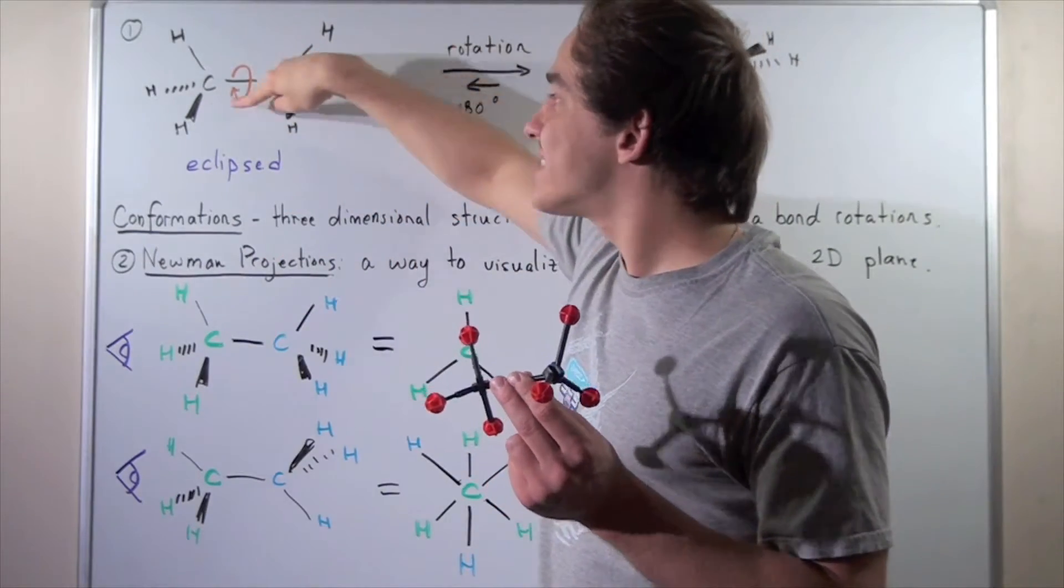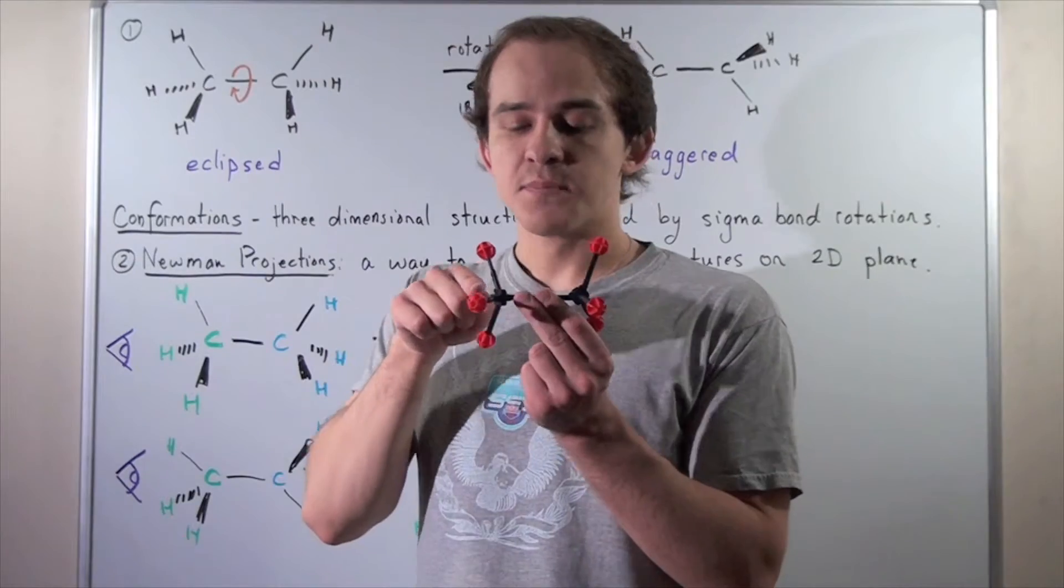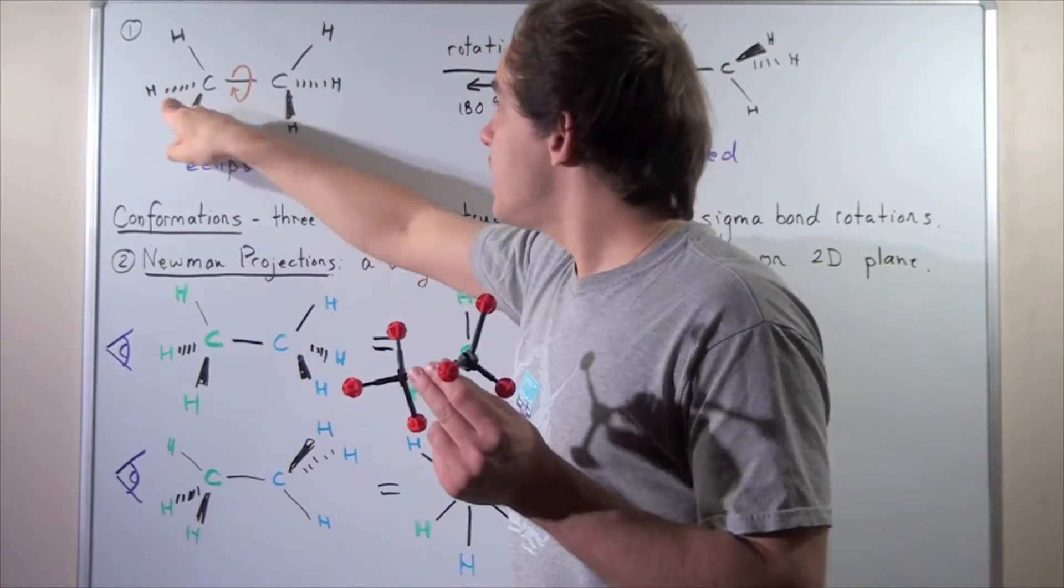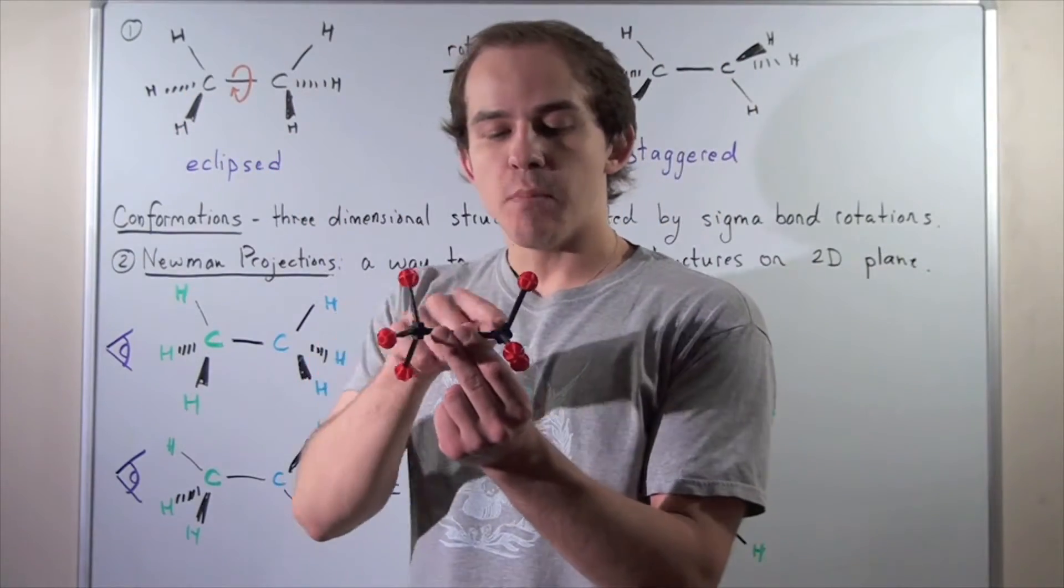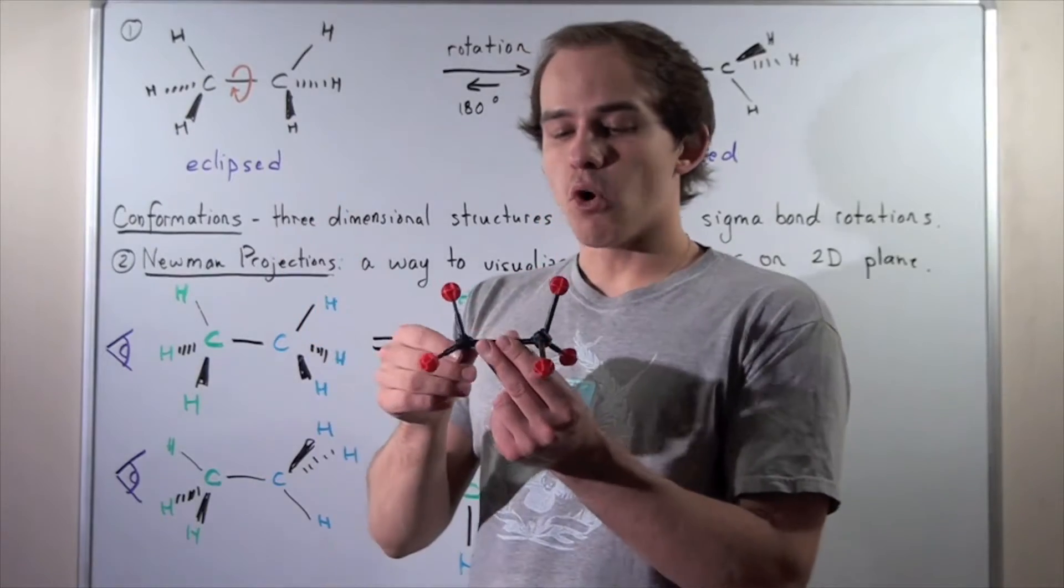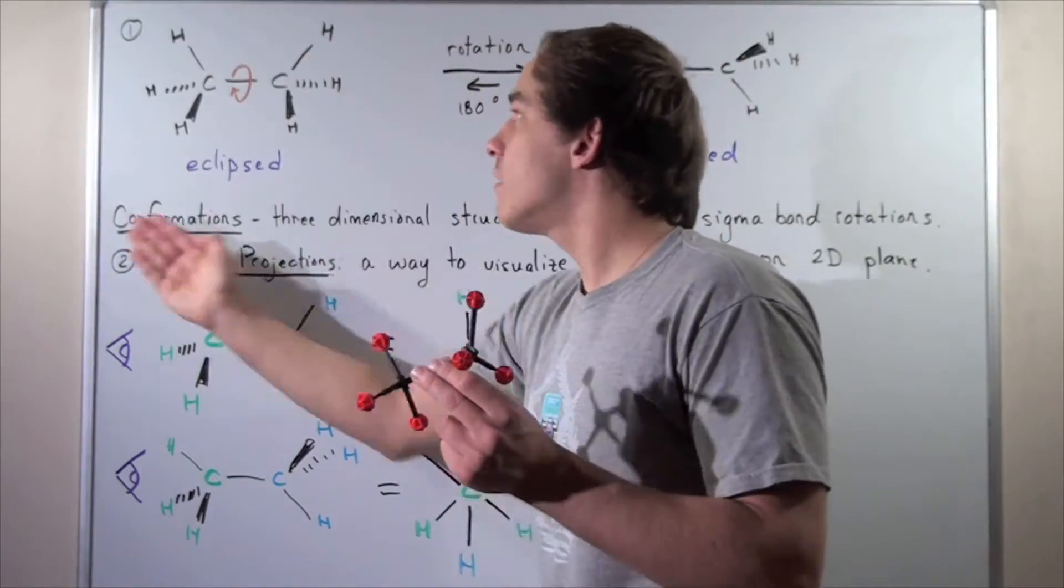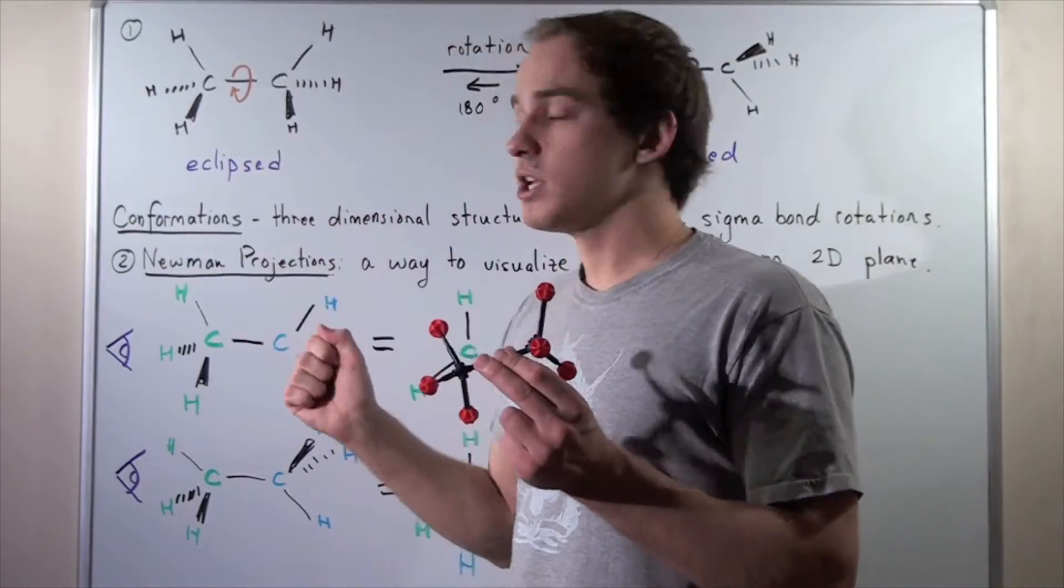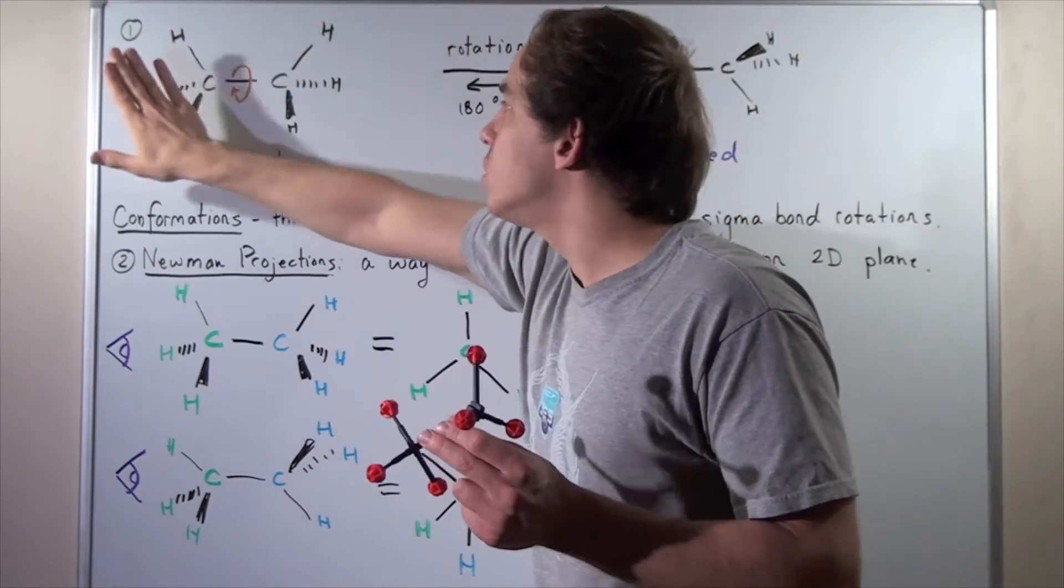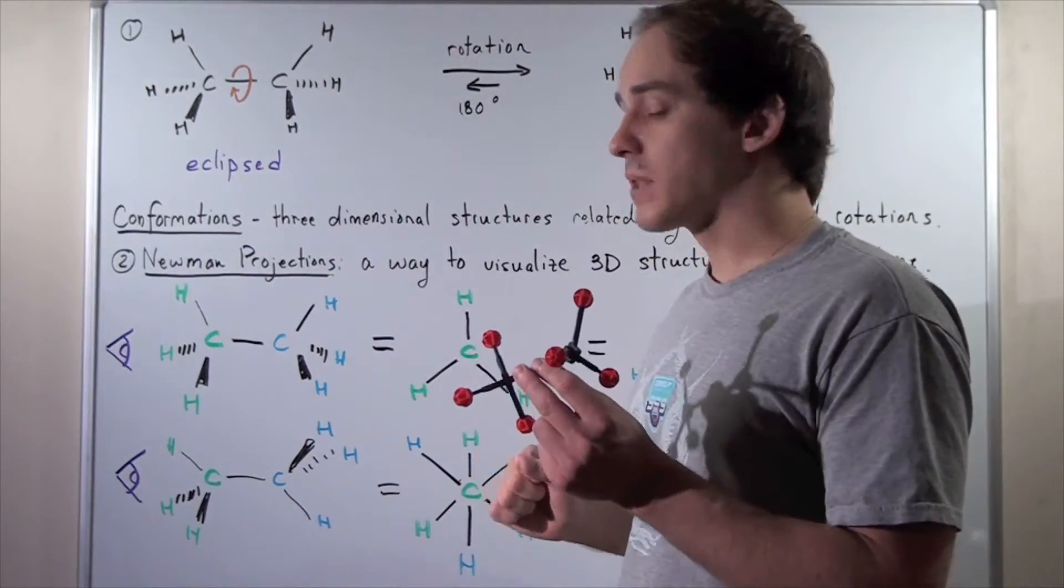These black solid wedges are our sigma bonds, our covalent bonds, coming out of the board. These dashed wedges are sigma bonds in the back, going into the board. These two sigma bonds are on the plane of the page, on the plane of the board. If this was the x-y axis, these two sigma bonds would be on the x-y plane.